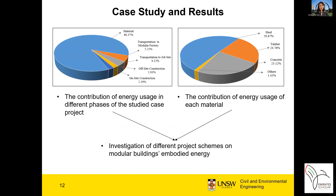As can be seen, the energy contribution of the two extra stages — transportation and off-site construction for modular building — is quite similar to the other transportation and on-site construction stages in our case study, so it cannot be ignored, especially for cases where the travel distance is large. Although the contribution of building materials to embodied energy is the greatest compared to transportation and construction, those two stages still consume significant energy and need to be included in energy assessment and reports.